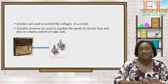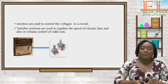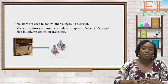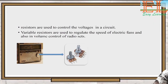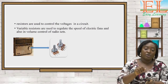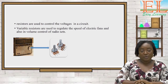Other uses of resistors include controlling voltage in a circuit. Variable resistors are also used to control the speed of electric fans and the volume control of radio sets. The knob on a radio set that turns up or down to adjust the volume works because of the variable resistor.